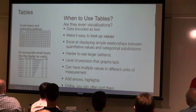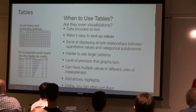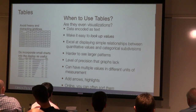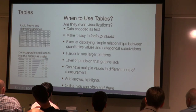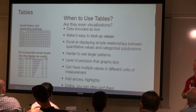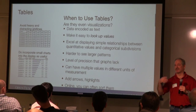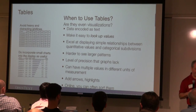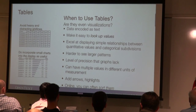Tables are very good visualizations — good for specific values and for explaining simple relationships. If you're using tables, use other things like sparklines to show trends. Tables have a level of precision that charts don't. Add arrows and highlights. If viewing online, you can often sort by clicking column headers and filter the data. Tables are more on the attentive side because you really have to read the numbers, but they're a very good visualization in certain scenarios.